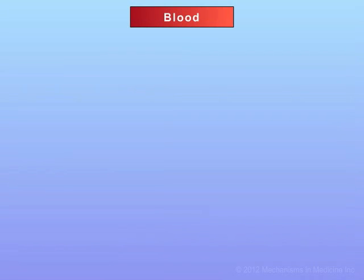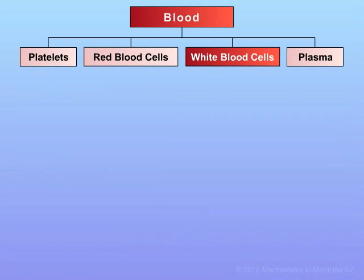We are now going to discuss the immune system and the basic functions of the elements that comprise the immune system. The blood is the major organ in the body that comprises the immune system and its ability to ward off infection.